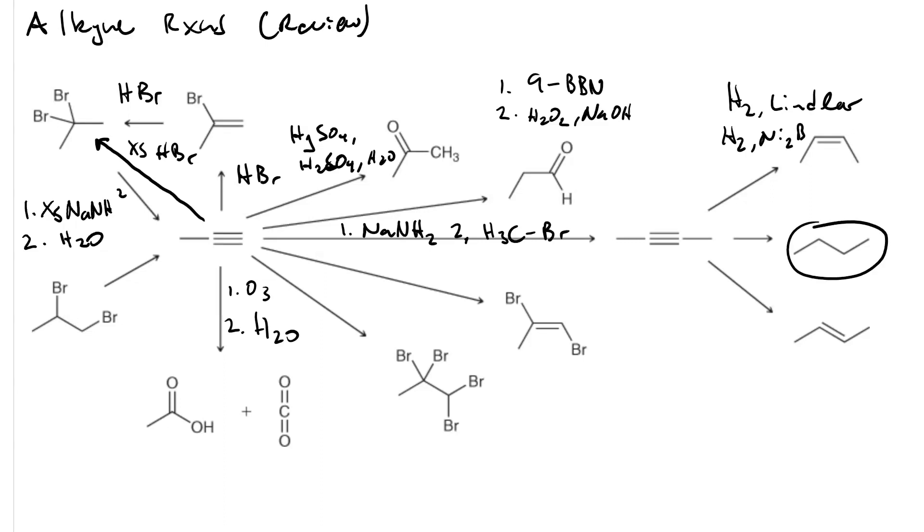If we want to go all the way to the alkane, we just do catalytic hydrogenation with palladium or platinum and H2.